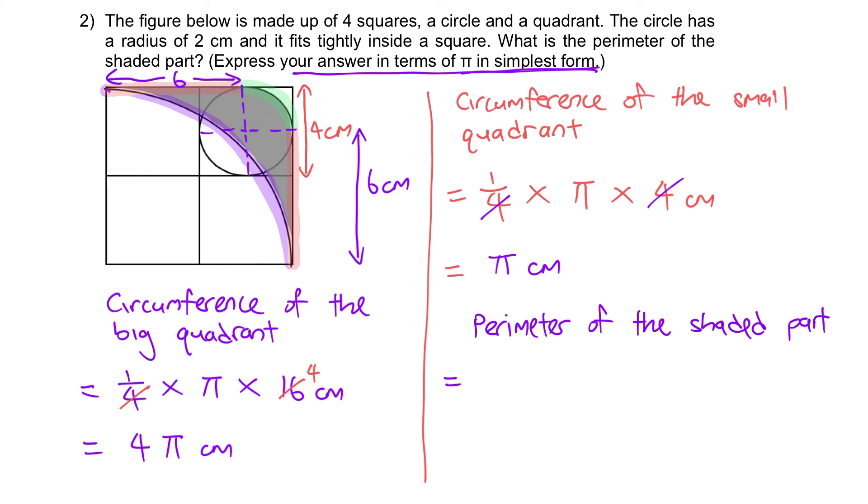Equal to 4π plus π plus 6 plus 6, which is 12. Let's simplify this answer. In total, we will get 4π plus π, that's 5π, plus the 12. The whole thing is 5π + 12 cm.